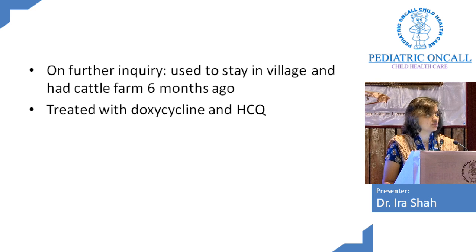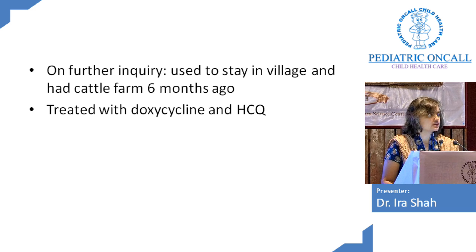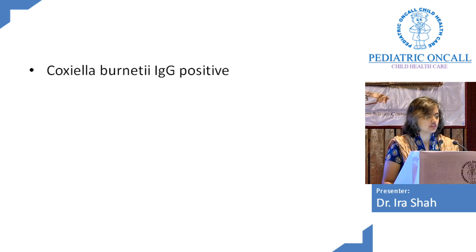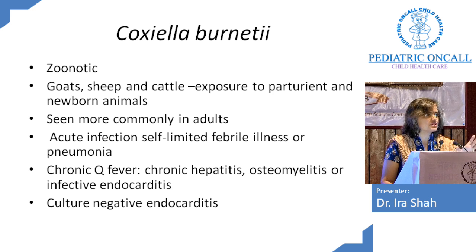In history, we found out she used to stay in a village and they had a cattle farm there six months ago. When you think of cattle farm with infective endocarditis and hepatitis, the first thing that comes to mind is Q fever. We started her on doxycycline and her Coxiella burnetii IgG was positive — so this was Q fever, and we added chloroquine. This is a rare condition, but I'm giving you an idea of the thinking process.